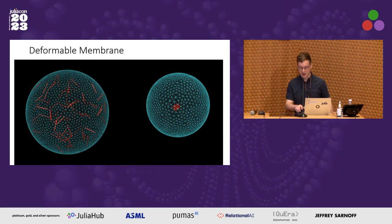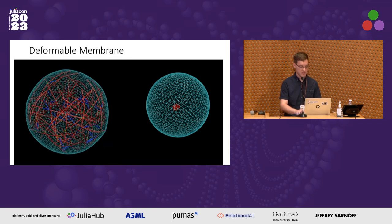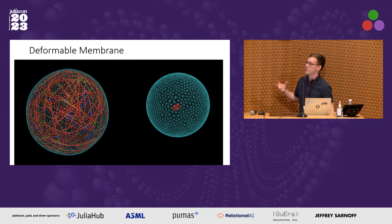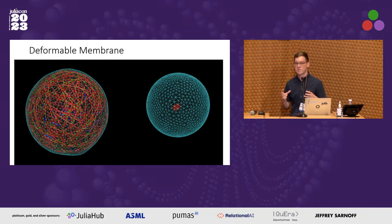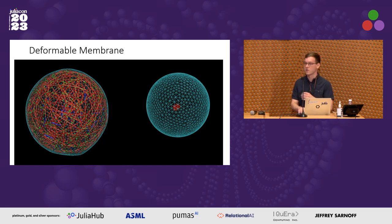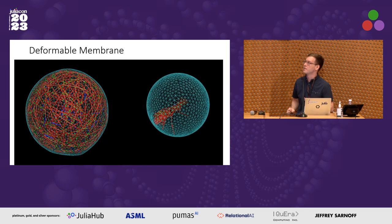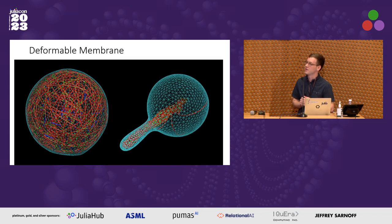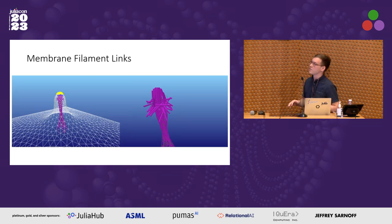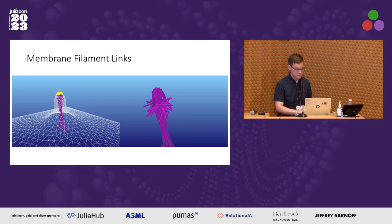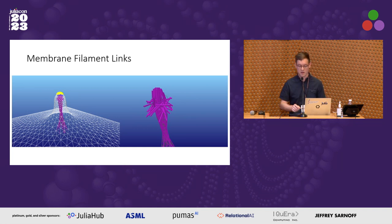Another really cool thing that Haoran Ni has added is a deformable membrane mechanics model. Instead of a rigid boundary or artificial box, we can have the filament network running inside a more biological deformable membrane. You can see it causing a protrusion in the membrane. We're also working on filament-membrane links — the yellow links show filaments attaching to the membrane.